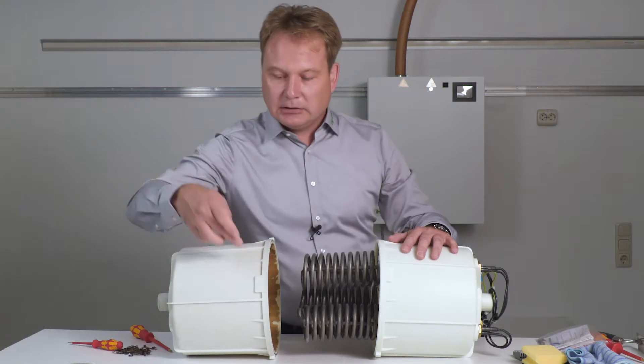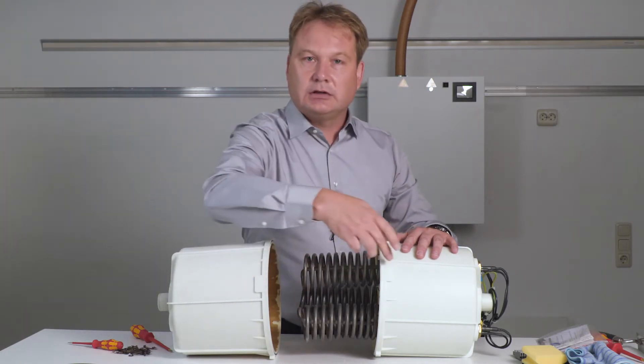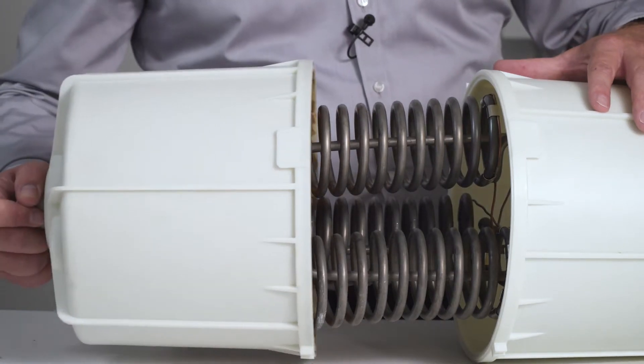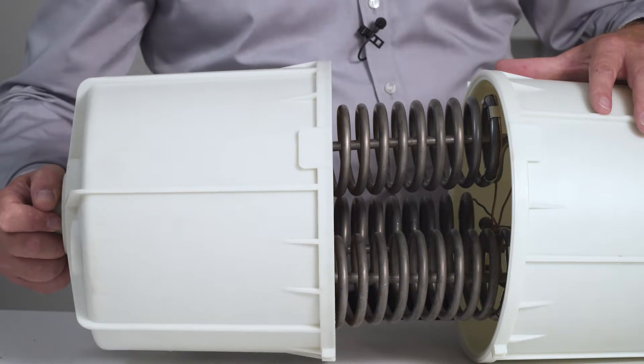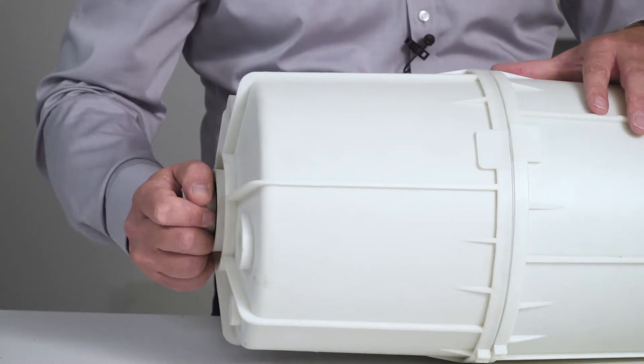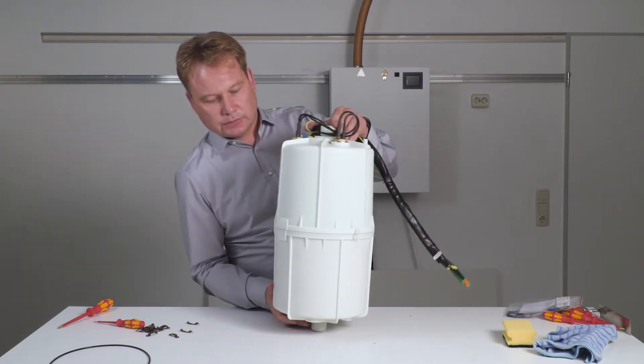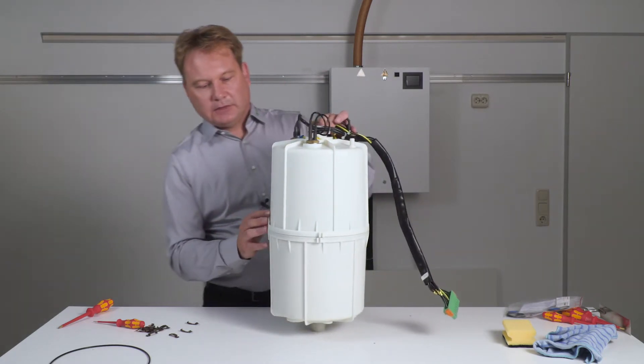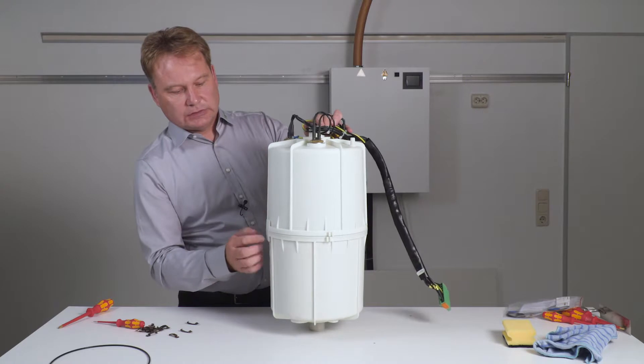As you can see here, there are two flaps. The two must touch each other when aligning the cylinder halves. You can also adjust the steam cylinder a little bit.